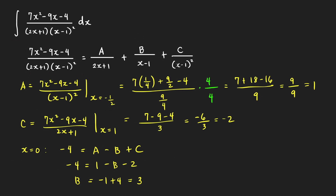As you can see, we got the same values for a, b, and c. For me, this cover-up technique is simpler and faster than the first method. That's all for this video. Thanks for watching and hope to see you next time.